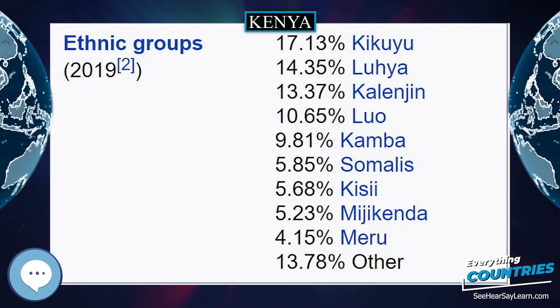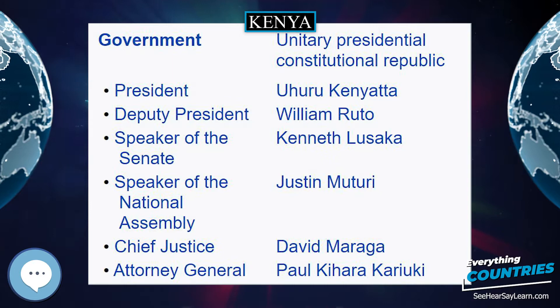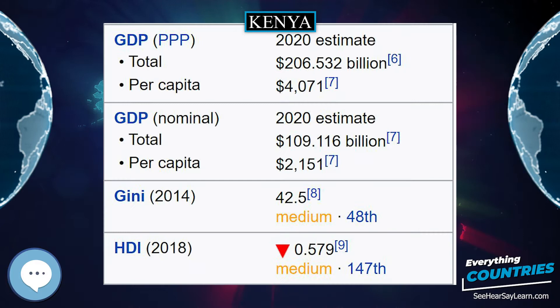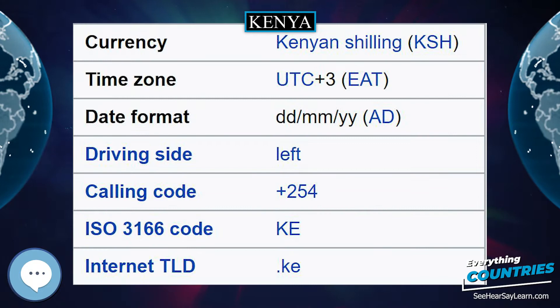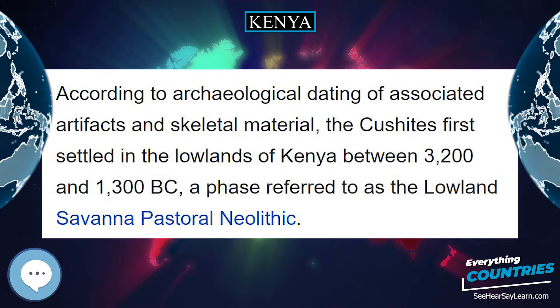The colonial history of Kenya dates from the establishment of a German protectorate over the Sultan of Zanzibar's coastal possessions in 1885, followed by the arrival of the Imperial British East Africa Company in 1888. Imperial rivalry was prevented when Germany handed its coastal holdings to Britain in 1890. This was followed by the building of the Uganda Railway passing through the country. The building of the railway was resisted by some ethnic groups, notably the Nandi led by Orkoiyot Koitalel Samoei for 10 years from 1890 to 1900. However, the British eventually built the railway. The Nandi were the first ethnic group to be put in a native reserve to stop them from disrupting the building of the railway.